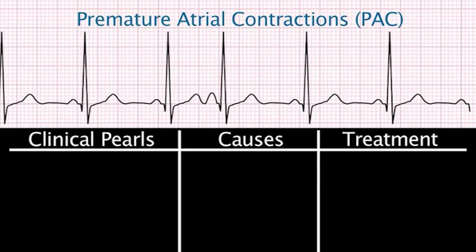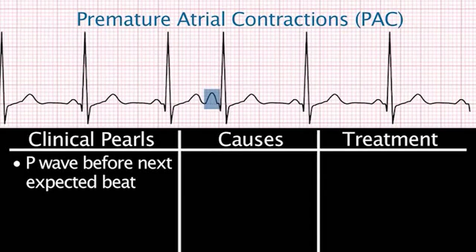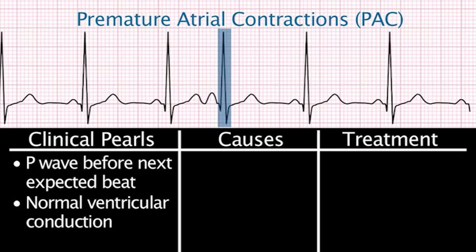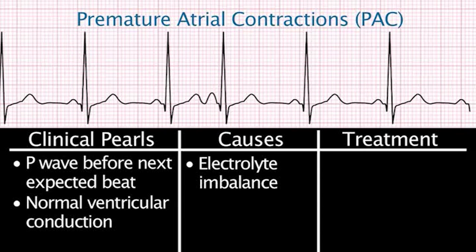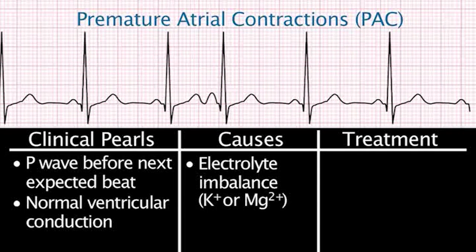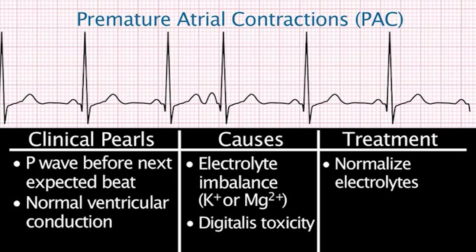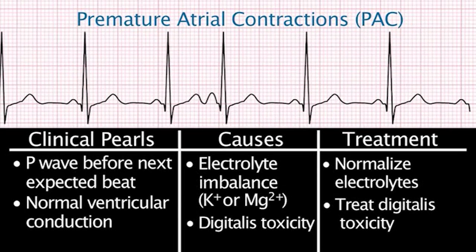A premature atrial contraction occurs when a P wave comes prematurely, before the next expected normal beat. The electrical conduction to the ventricle is normal. The cause is usually an electrolyte imbalance, such as abnormal potassium or magnesium levels in postoperative patients, or it could be from digitalis toxicity. Treatment involves correcting the electrolyte imbalance and treating the digitalis toxicity.